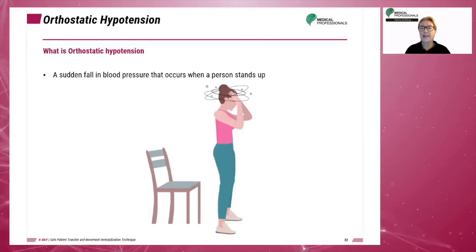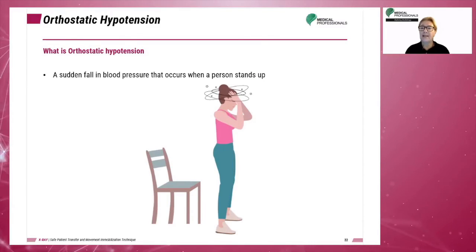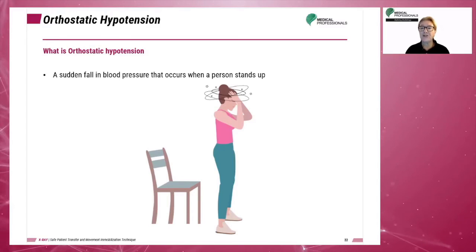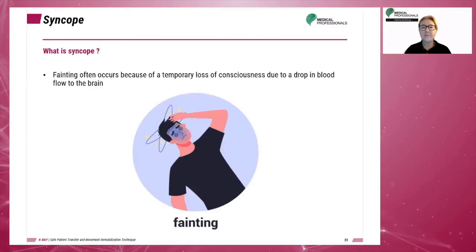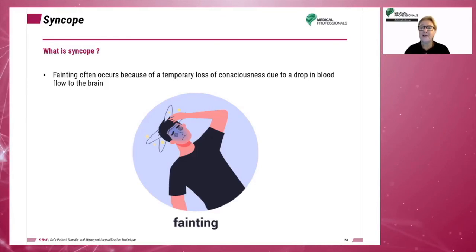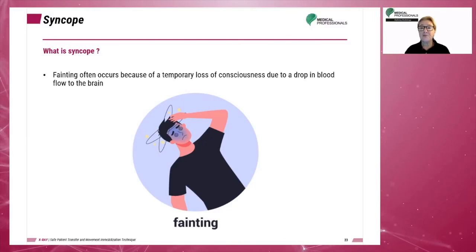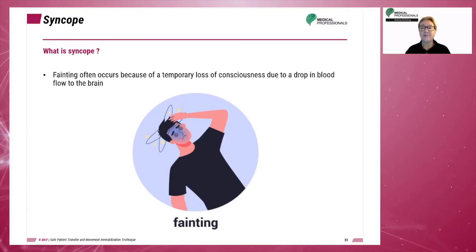Orthostatic hypotension is a sudden fall in blood pressure that occurs when a person stands up. It is important that technologists understand this phenomenon because patients will be moving from recumbent to standing positions during the course of x-ray examinations. Syncope means fainting, often caused by a temporary loss of consciousness due to a drop in blood flow to the brain. The technologist must carefully watch the patient when they are moving from a recumbent to a standing position.